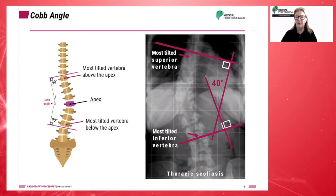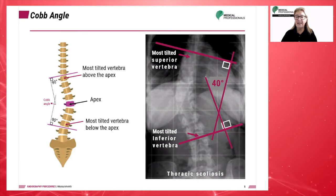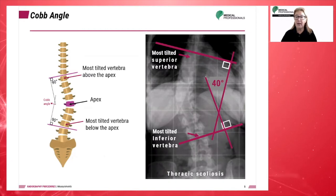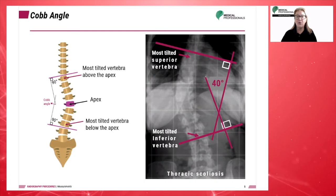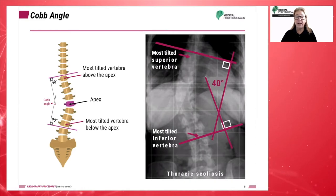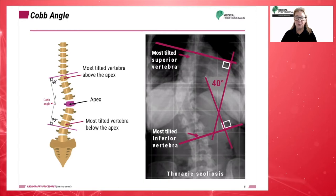A Cobb angle in the range of 10 to 20 degrees is considered mild scoliosis. When a Cobb angle ranges from 20 to 40 degrees, the scoliosis severity is moderate. And a Cobb angle greater than 40 degrees means severe scoliosis.